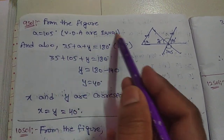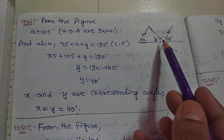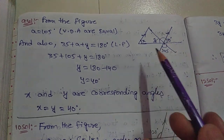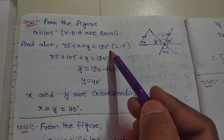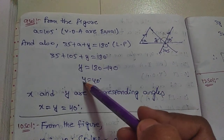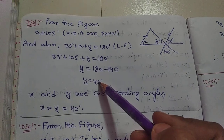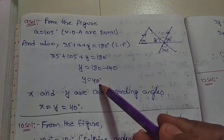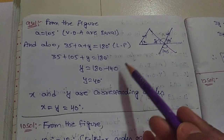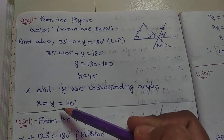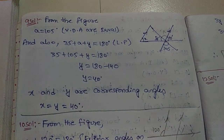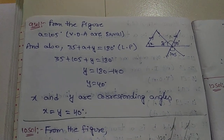So y equals 105 degrees by vertical opposite angles. This is a linear pair, so adding gives us the y value as 40 degrees. y equals 40 degrees and x equals 40 degrees — corresponding angles are equal, so x and y are both equal to 40 degrees. This is the solution.